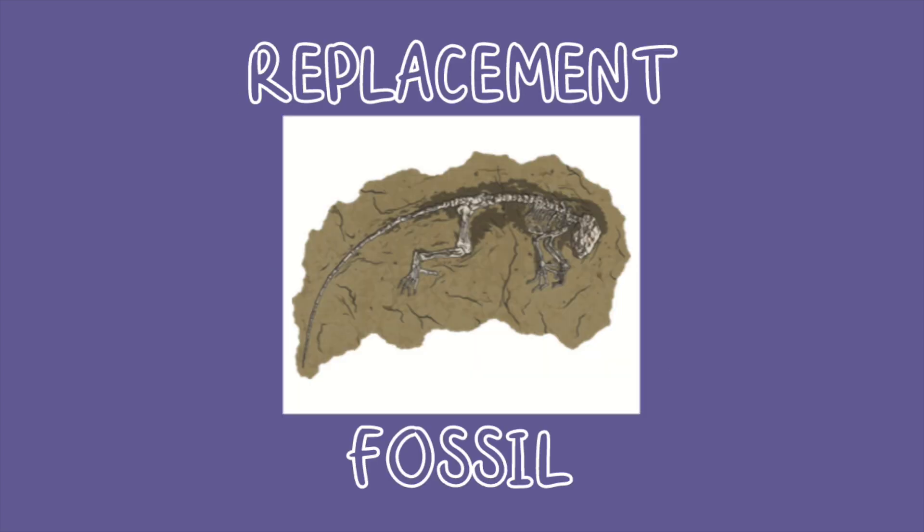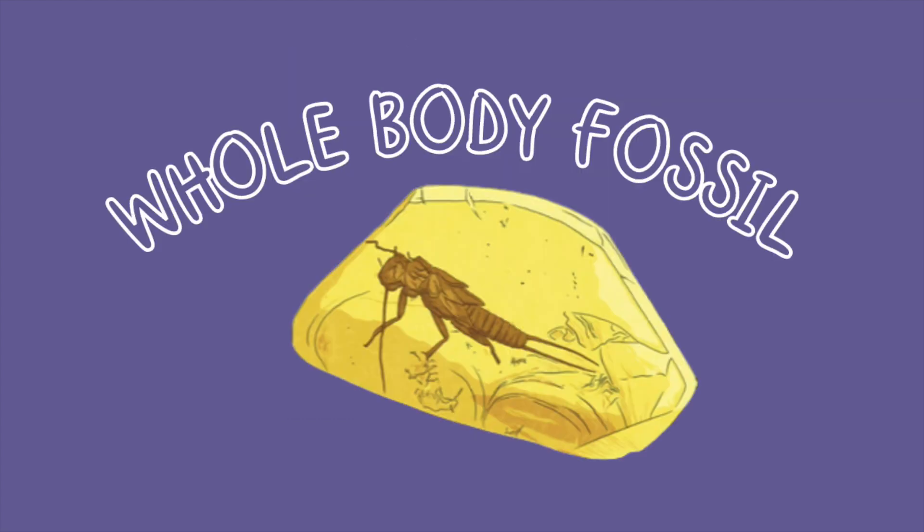Sometimes only the soft parts inside the bones decay, leaving the hard outside of the skeleton. The bones have small holes in them, like a sponge, which can fill with minerals. The minerals then harden, creating a replacement fossil. Whole body fossils are formed when an animal or plant is preserved in ice or peat bogs, or trapped in fossilized tree resin such as amber. They do not decay at all, and look exactly like they did when the animal or plant died.